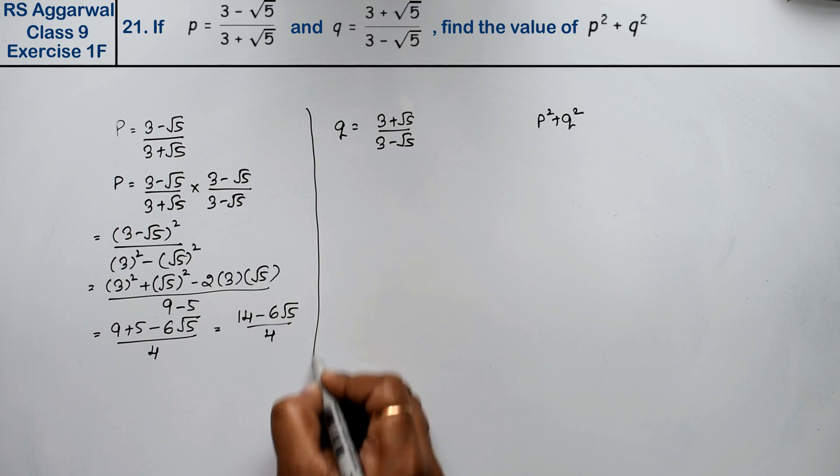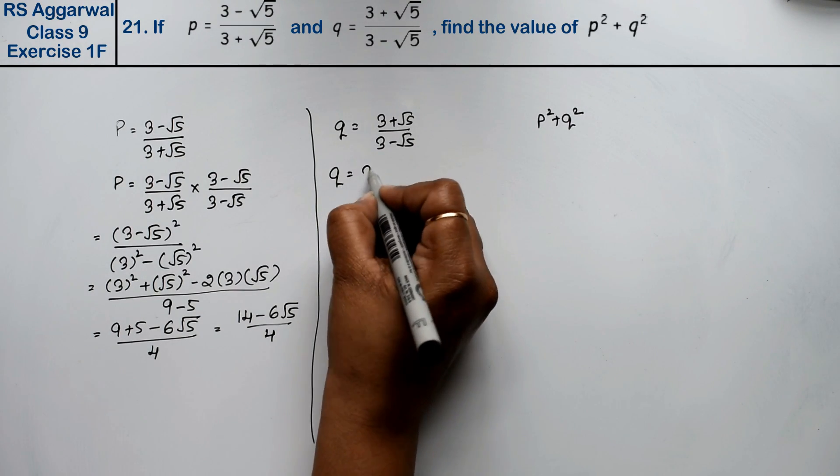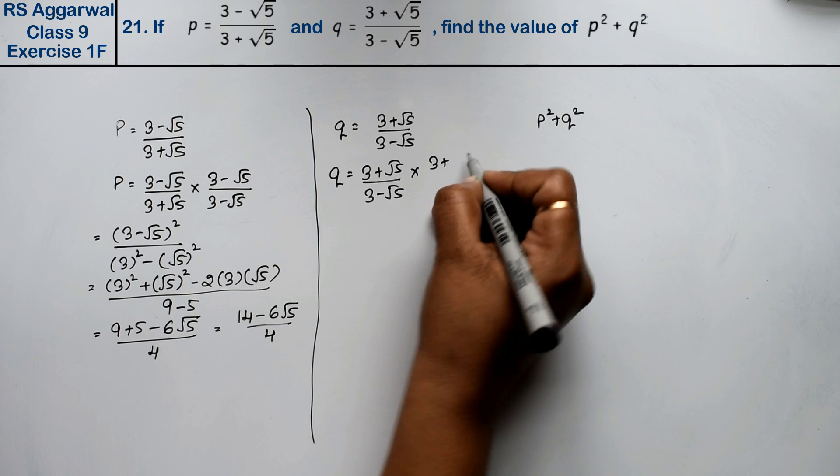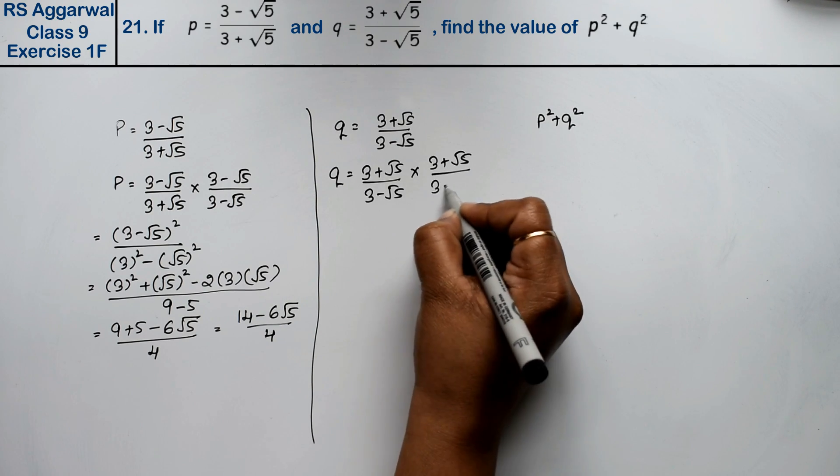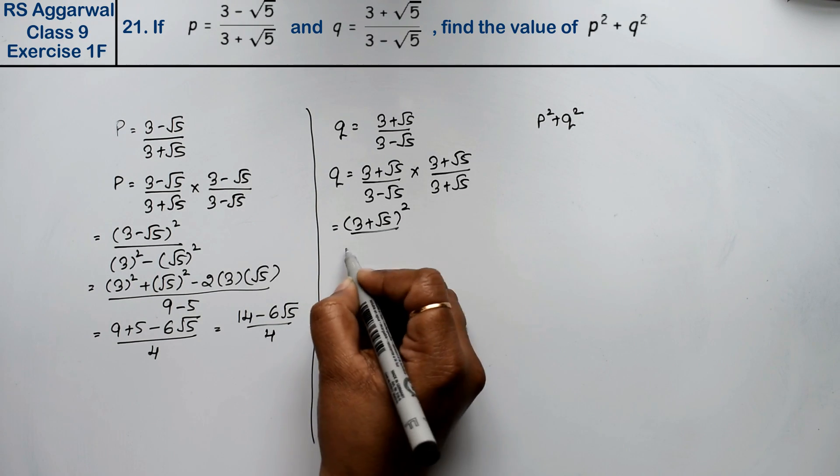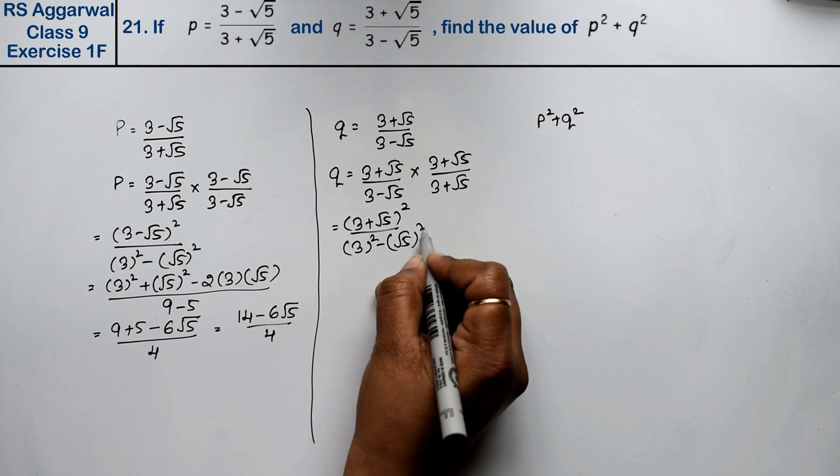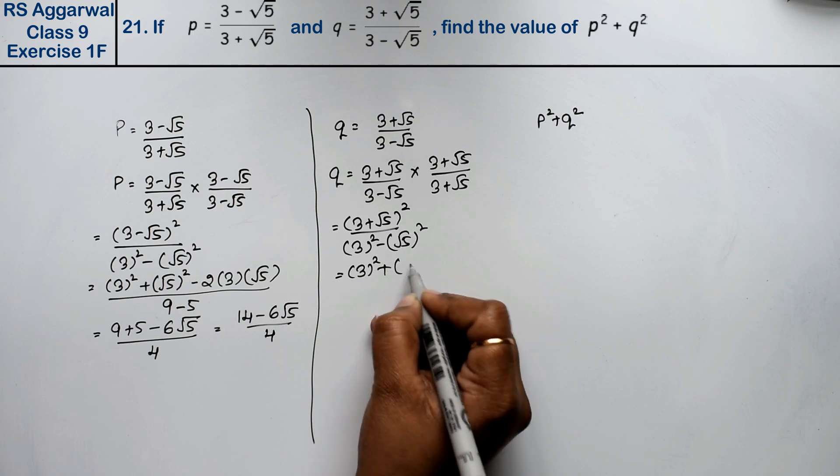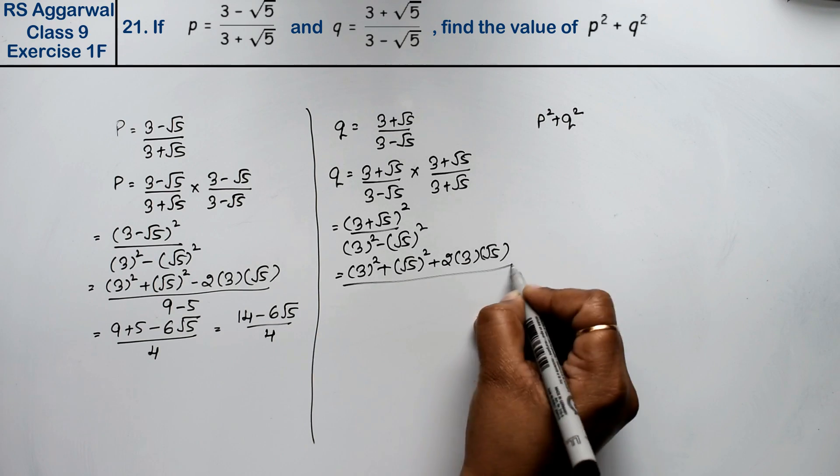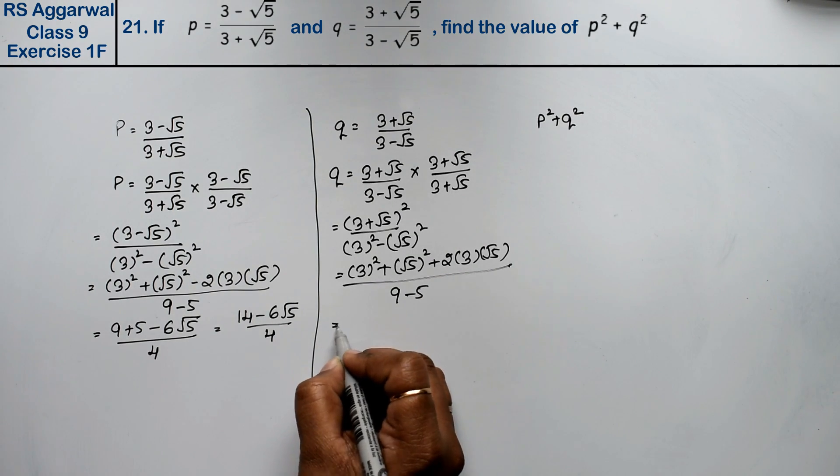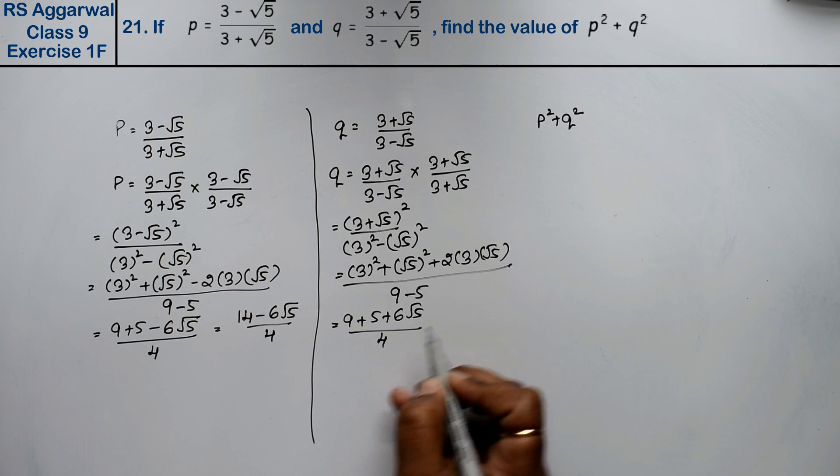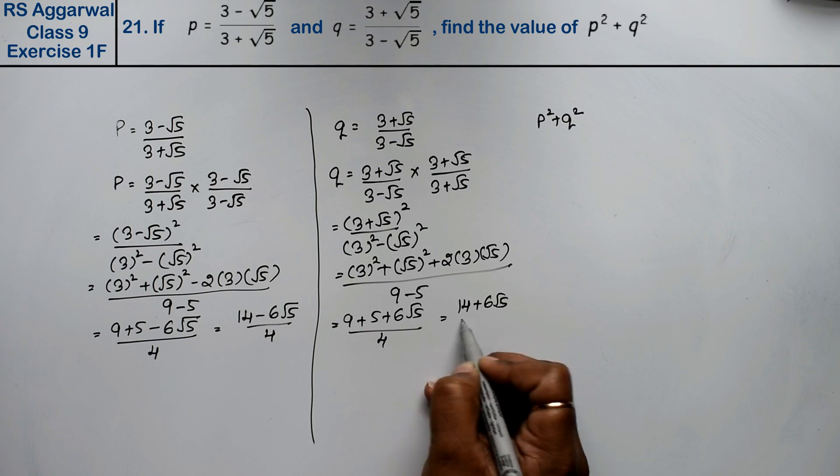If you want, you can also take common, or you can leave it like this. Now, we will find the value of q. 3 plus root 5 upon 3 minus root 5, rationalize by 3 plus root 5. So this becomes 3 plus root 5 whole square upon 3 square minus root 5 square. So here is a square plus b square plus 2ab upon 9 minus 5. That is 9 plus 5 plus 6 root 5 upon 4, which equals 14 plus 6 root 5 upon 4.